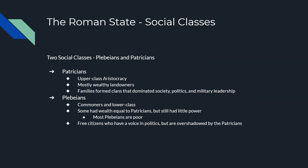There are two classes in Rome: the plebeians and the patricians. Plebeians are lower class; patricians are upper class. Plebeians have a little power; patricians have most of the power. Some plebeians have wealth equal to patricians, but it's about what family you're born into more than how much money you have. Patricians form clans that dominate society, politics, and everything. Plebeians just try to get by.